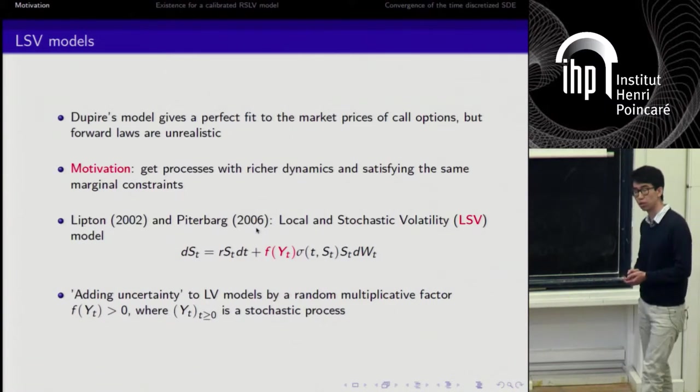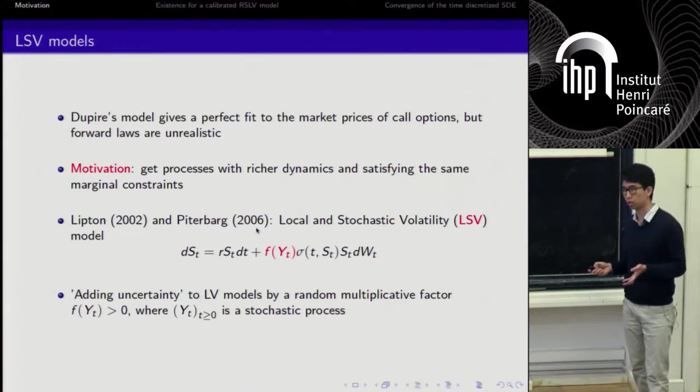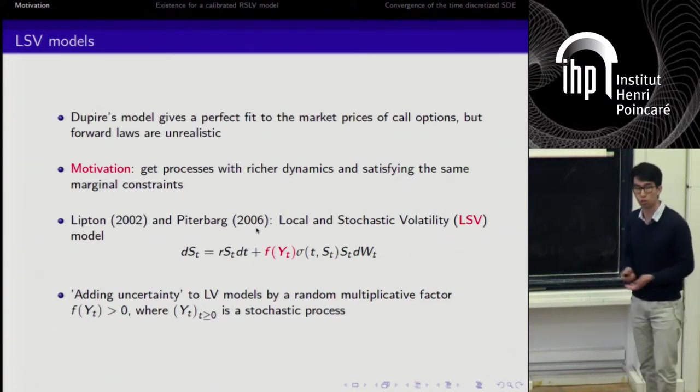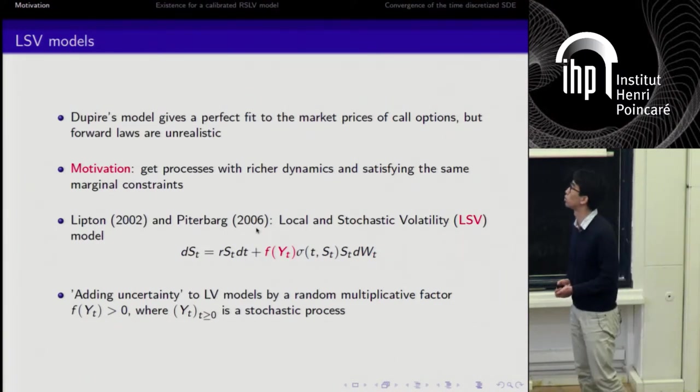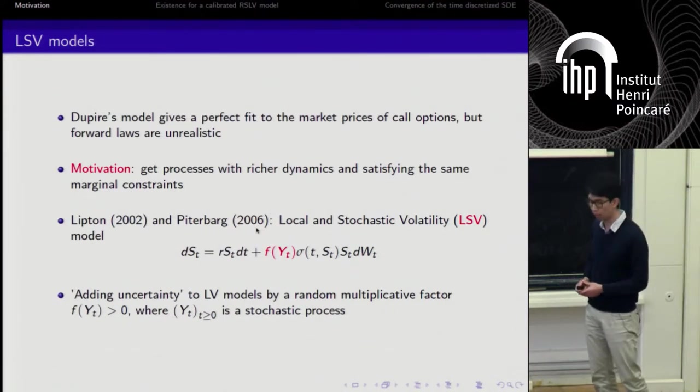In particular, what is unrealistic in Dupire's model is that the forward laws are unrealistic. In the call option, we only needed to know the marginal laws of S_T for all T. But there are other options that give me a payoff at certain maturity T_2, but actually depend on the realization of an event at some time T_1 between today and T_2. So this is not a feature that is captured by Dupire's model. The first motivation for some years was to gain, to get processes with richer dynamics than Dupire's model, but still satisfying the marginal constraints that we have imposed at the beginning.